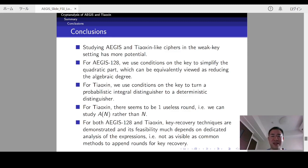However, we have to carefully study the expressions before we notice it. In addition, for Tiaoxin, there seems to be one useless round because we indeed study A·N rather than N. Finally, for both AEGIS-128 and Tiaoxin, key recovery techniques are shown and its feasibility much depends on the dedicated analysis of the expressions and this is not visible as common methods to append round for key recovery. That's all. Thank you.